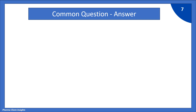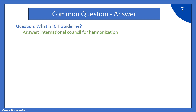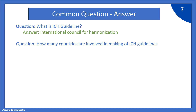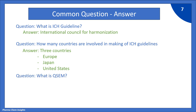Now let us see some common questions and answers. First: what is ICH guideline? That is International Council for Harmonization. Next question: how many countries are involved in making of ICH guidelines? There are three countries involved — Europe, Japan and United States. What is QSEM? QSEM means quality, safety, efficacy and multidisciplinary guidelines.